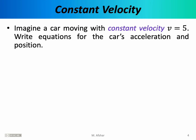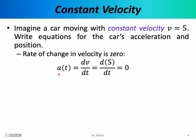The previous example was somewhat trivial and boring. Here's a slightly more interesting example: imagine a car moving with constant velocity of 5 meters per second. Write equations for the car's acceleration and position. On the previous example I gave you x and asked for v and a; in this example I'm giving you v and asking for a and x. Calculating acceleration is easy — acceleration is the derivative of velocity with respect to time. Velocity is given as 5, a constant, so its derivative is 0. The acceleration is zero.